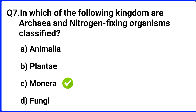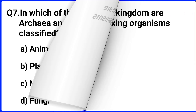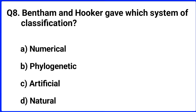Question number eight. Bentham and Hooker gave which system of classification? The right answer is option D: natural.